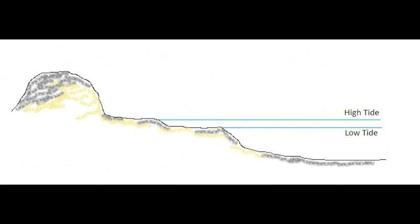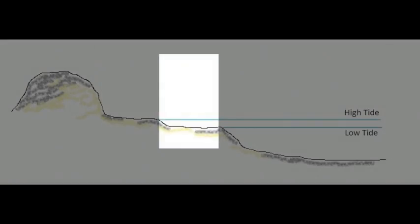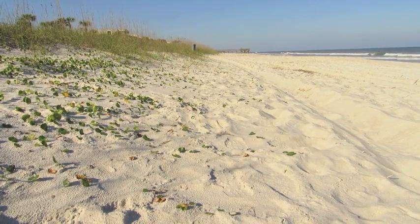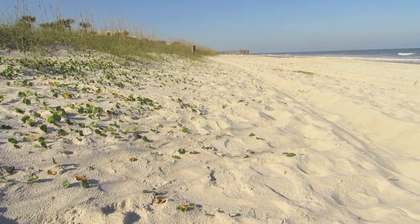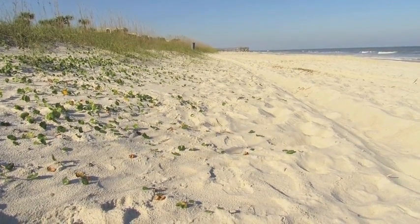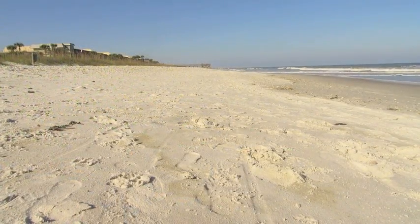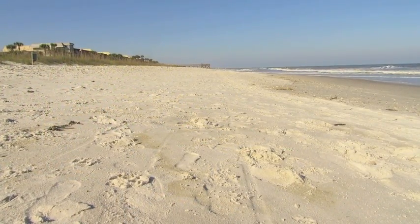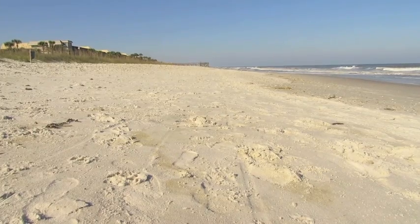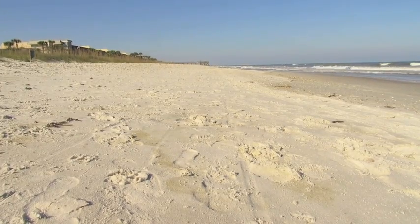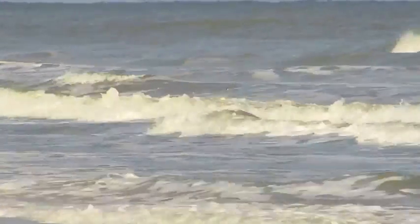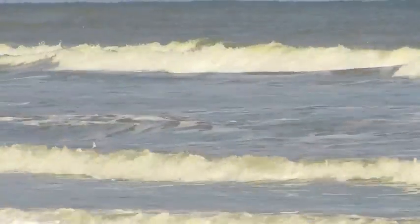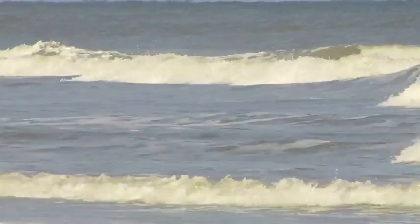Sandy beaches have three main areas or zones: the back shore, the foreshore, and the nearshore. The back shore is the area of the beach closest to the dunes — it is generally dry and only submerged during extremely high tides or storms. The foreshore is the area between the high tide and low tide mark, exposed to the changing tides. Finally, the nearshore extends from the low tide mark to beyond where the waves begin to form, and is influenced by nearshore currents.